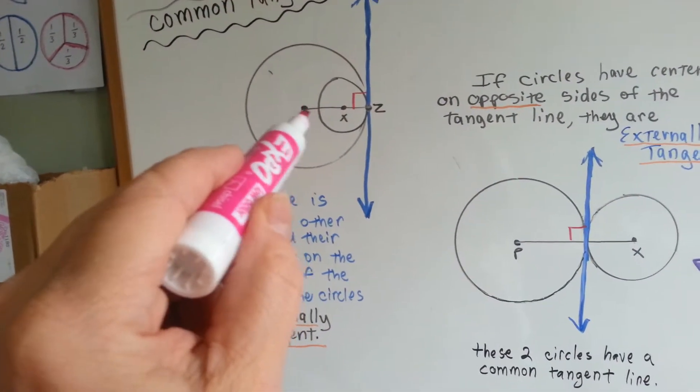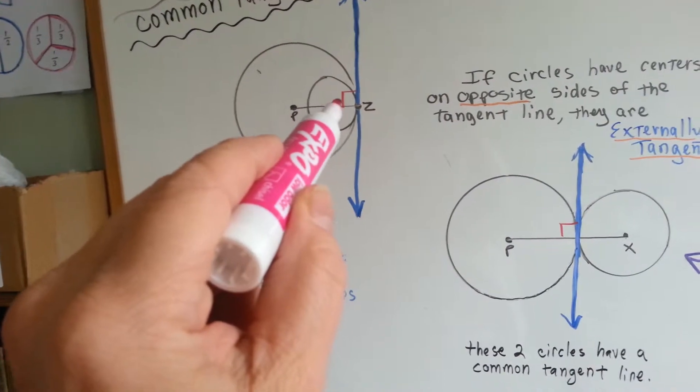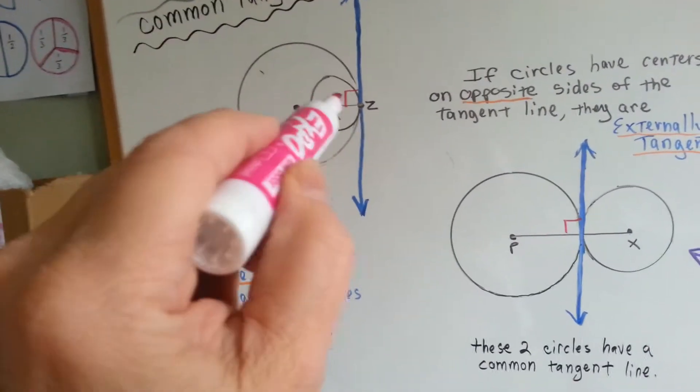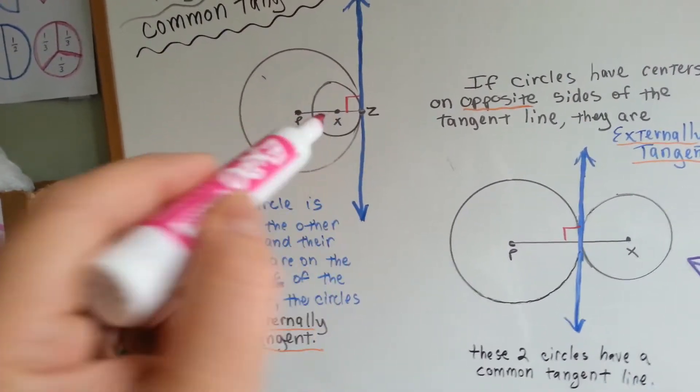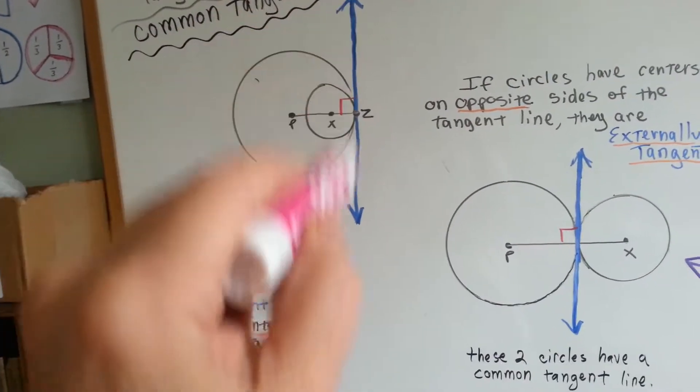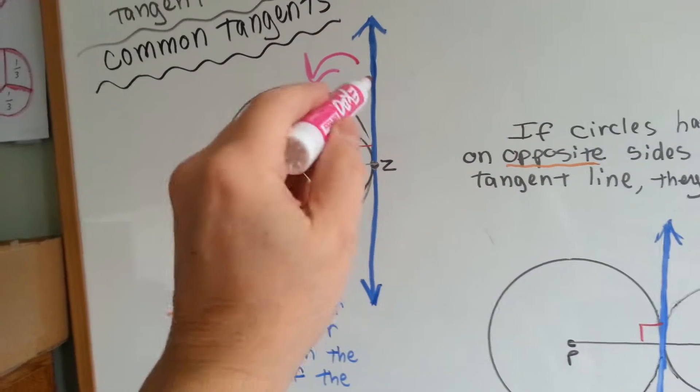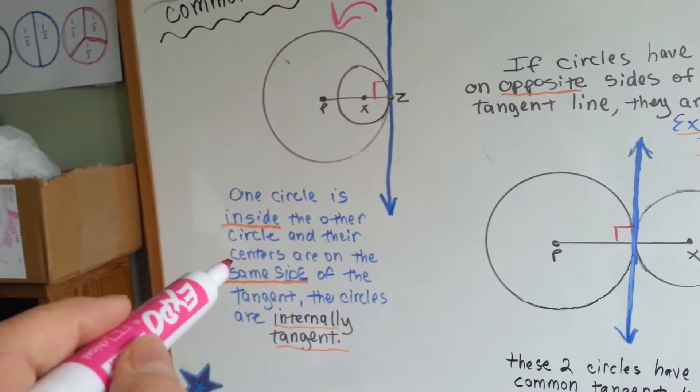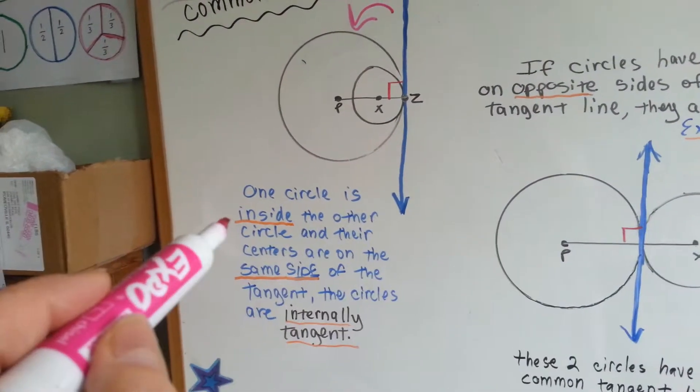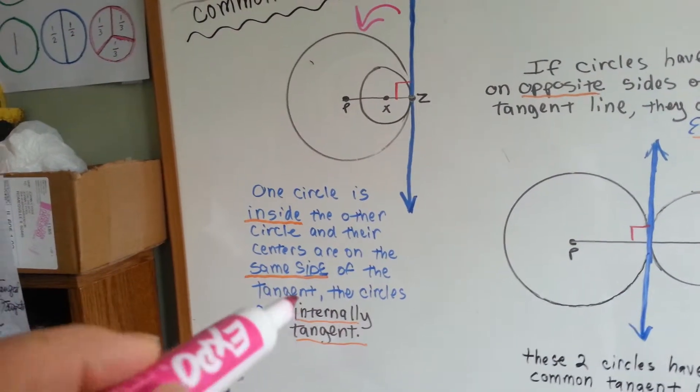So look at how, here's the center point, right? And here's the center point for this one. This is the center point for the big guy, and this is the center point for this little guy. They're on the same side of this line. They're both on the left side of this blue line. That means that they are internally tangent.